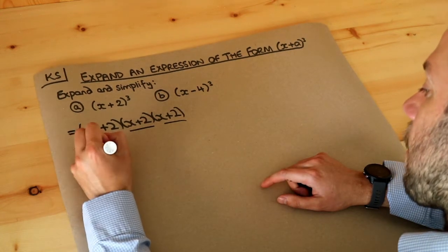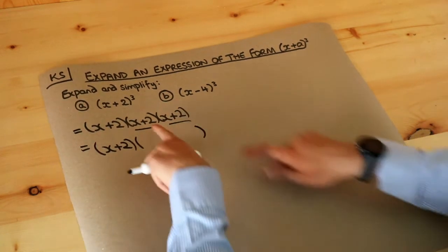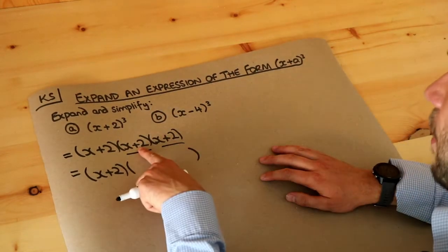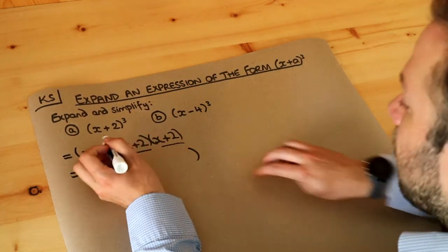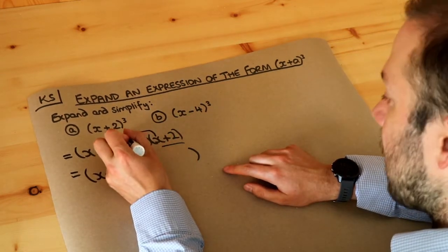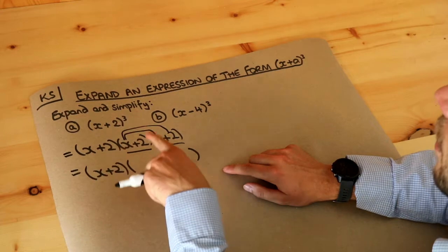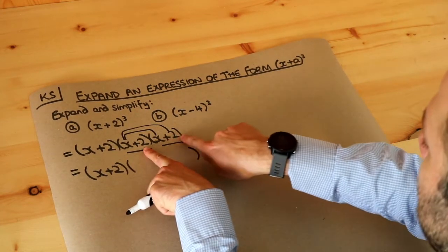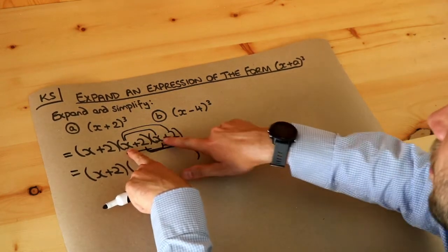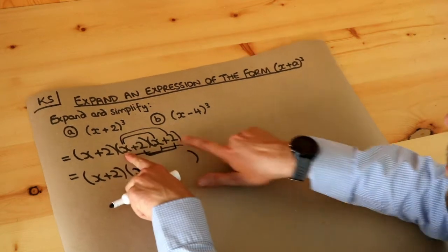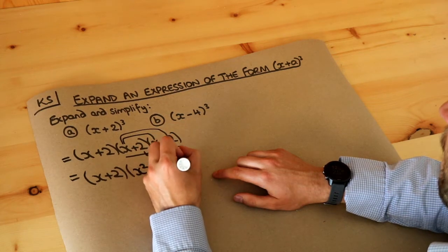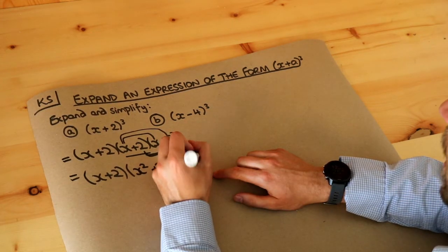I'm going to leave the first (x + 2) as it is, and in a big bracket expand the other two. Remember, to multiply two brackets we do each thing in the first bracket multiplied by each thing in the second. So x times x is x squared, x times 2 is 2x, then 2 times x is 2x, and 2 times 2 is 4. So we've expanded out those brackets.